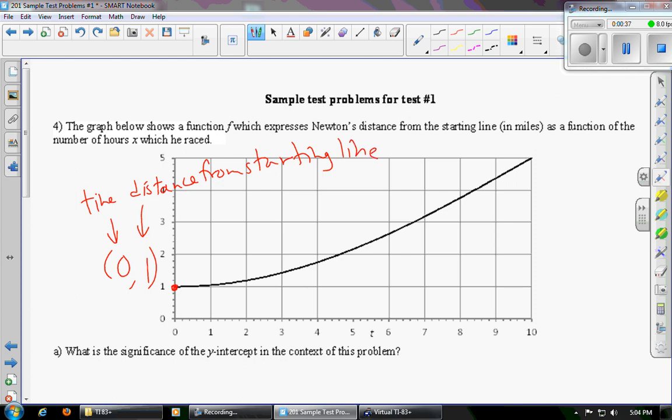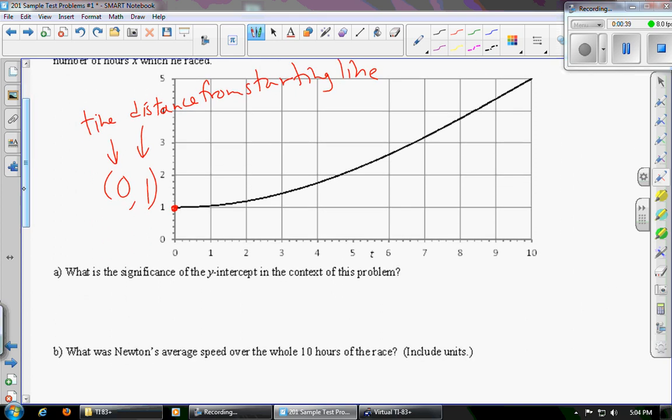So what this means, unfortunately for Newton's competitors, is that at the start of the race, Newton was one mile from the starting line. So whether he cheated or was just given a head start out of deference, we'll leave that to you to interpret.